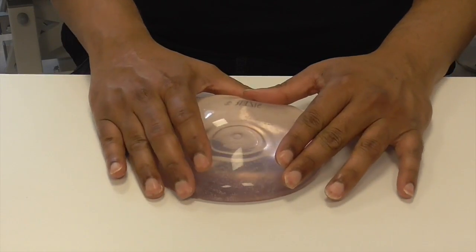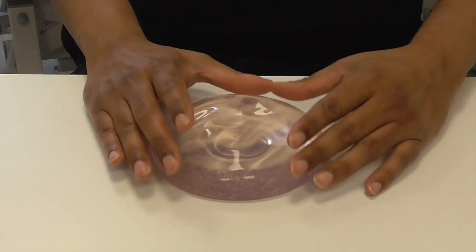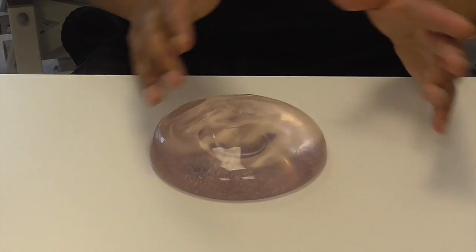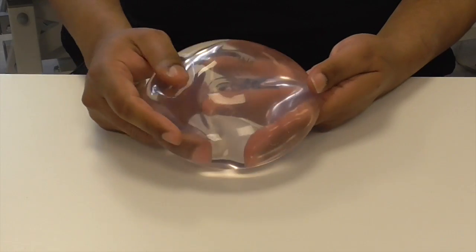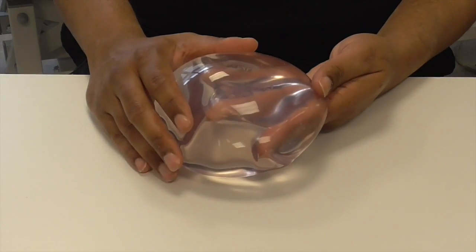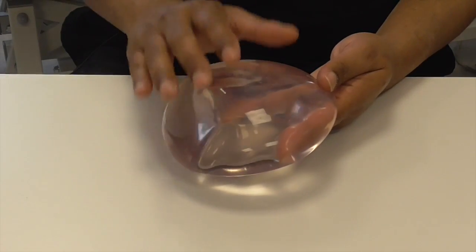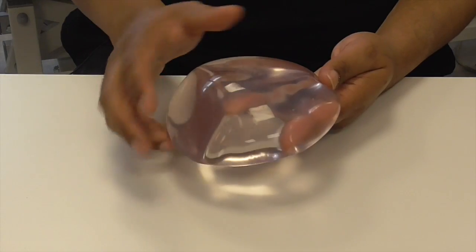Now all silicone implants that we use in the UK are essentially a silicone shell with silicone gel inside, but there are varieties. This one we have is a smooth shell implant, meaning the surface is nice and smooth, and intuitively you think this is the best thing.